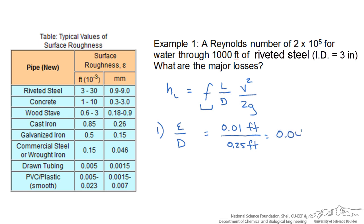The other piece of information we would need is the Reynolds number, which we are given as 2 times 10 to the 5th. Let's look at our Moody chart.